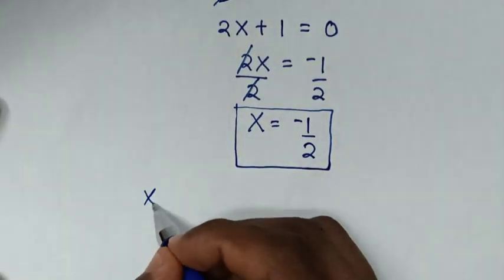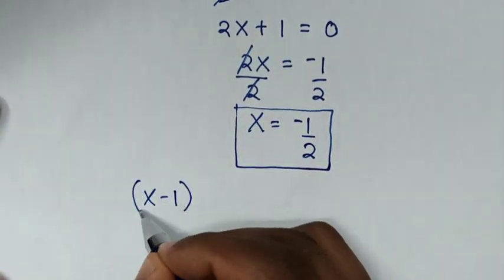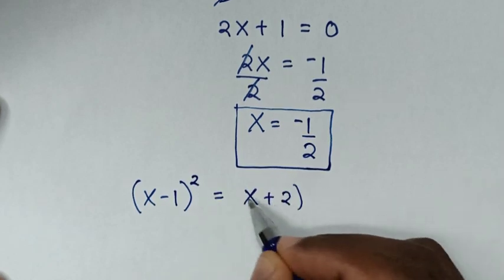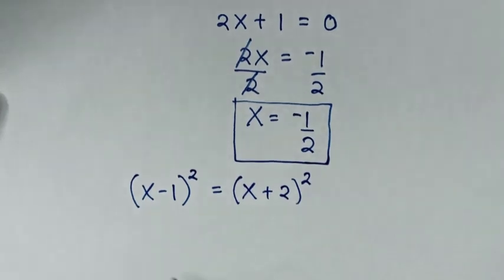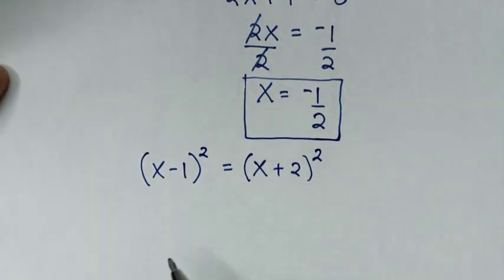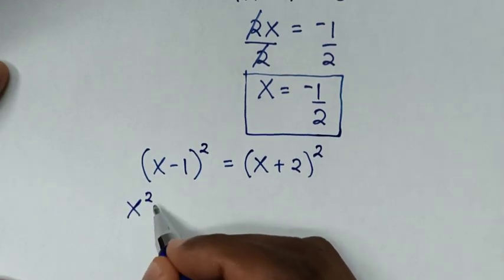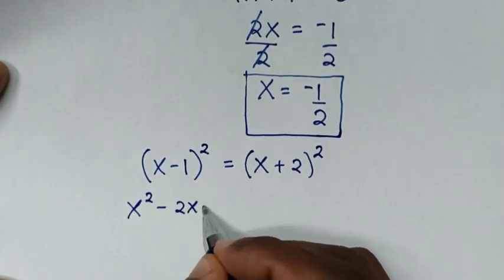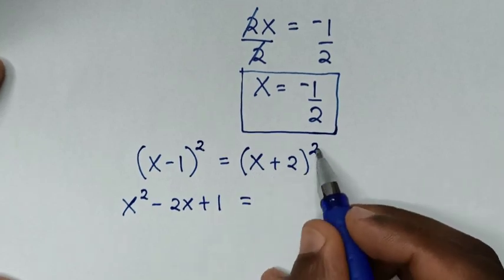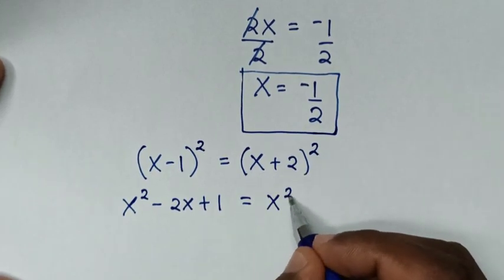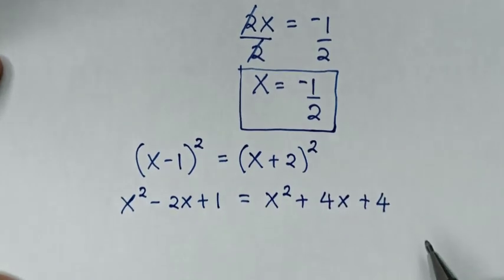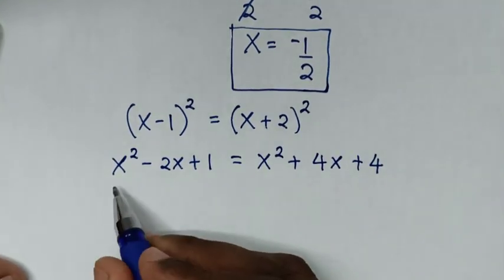Starting again with (x minus 1) squared equals (x plus 2) squared, we expand both sides. (x minus 1) squared expands to x squared minus 2x plus 1, and (x plus 2) squared expands to x squared plus 4x plus 4.